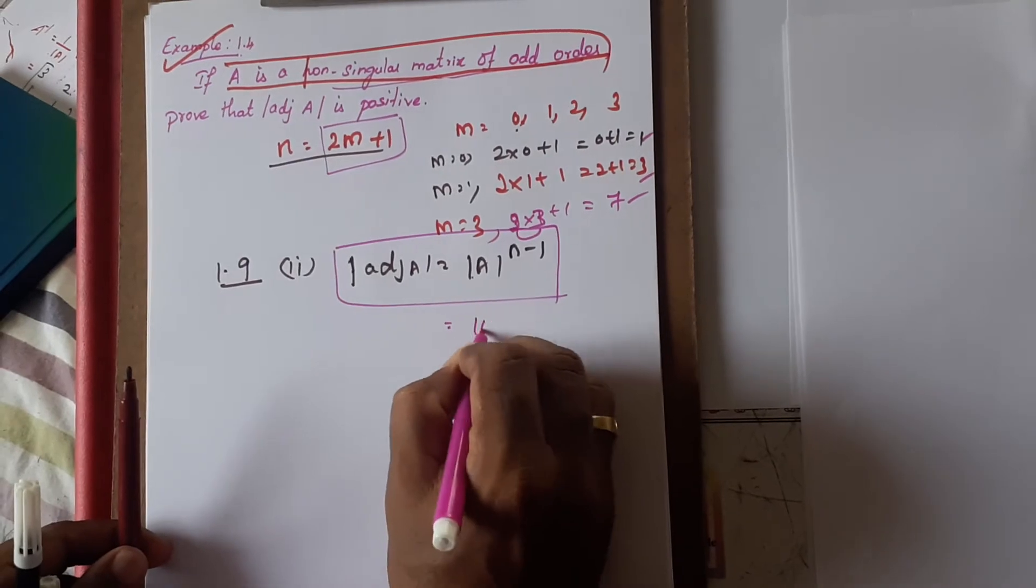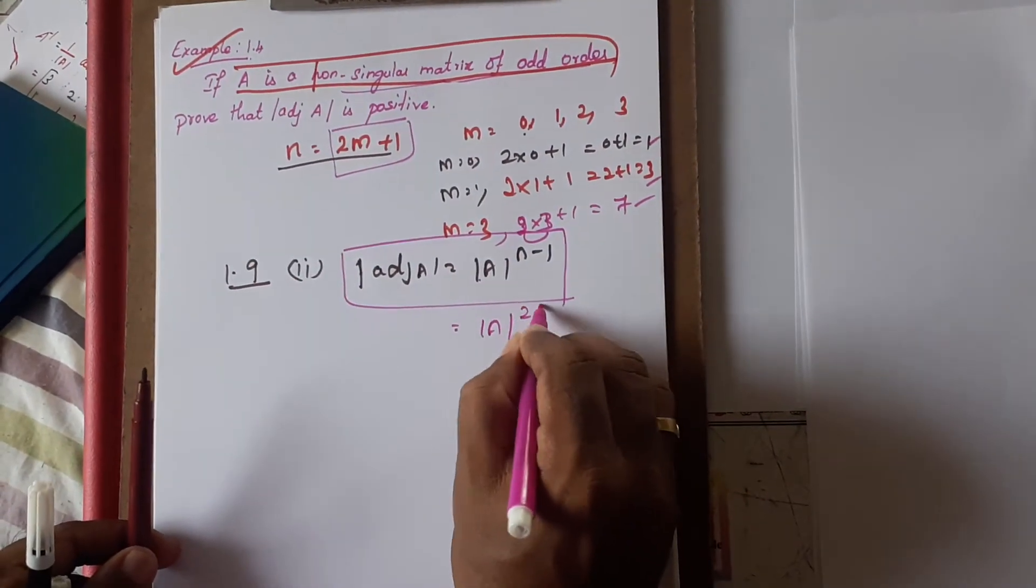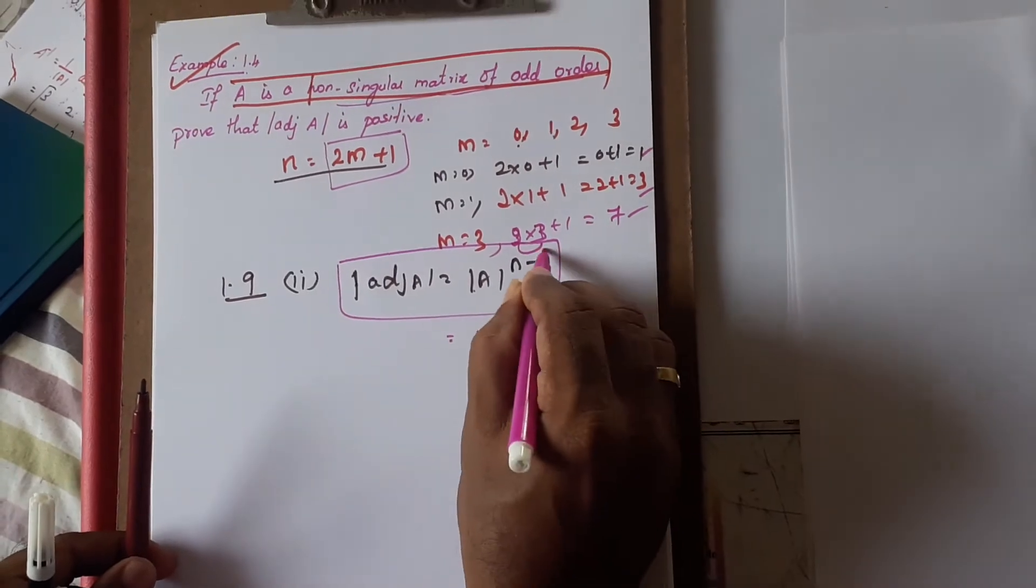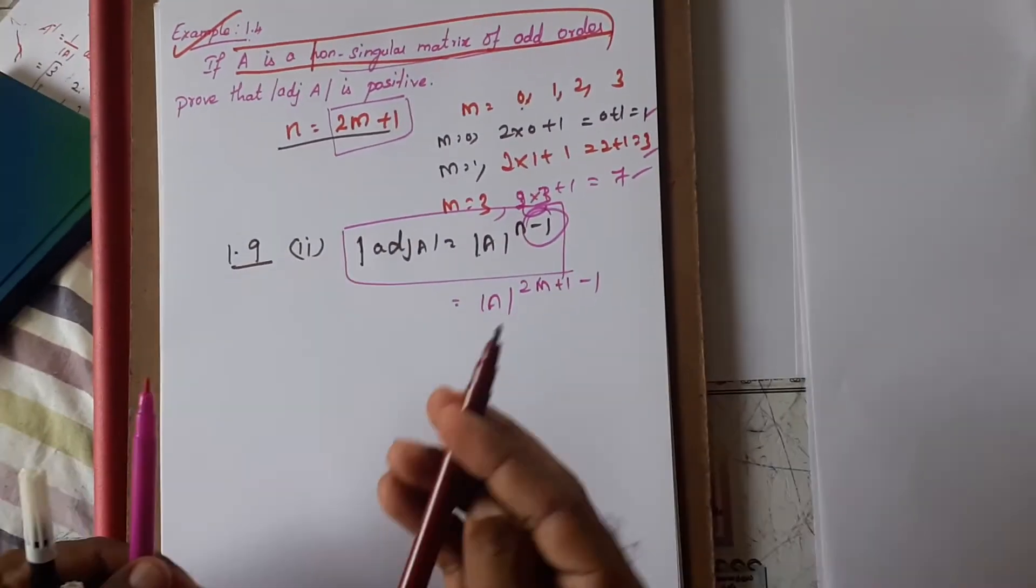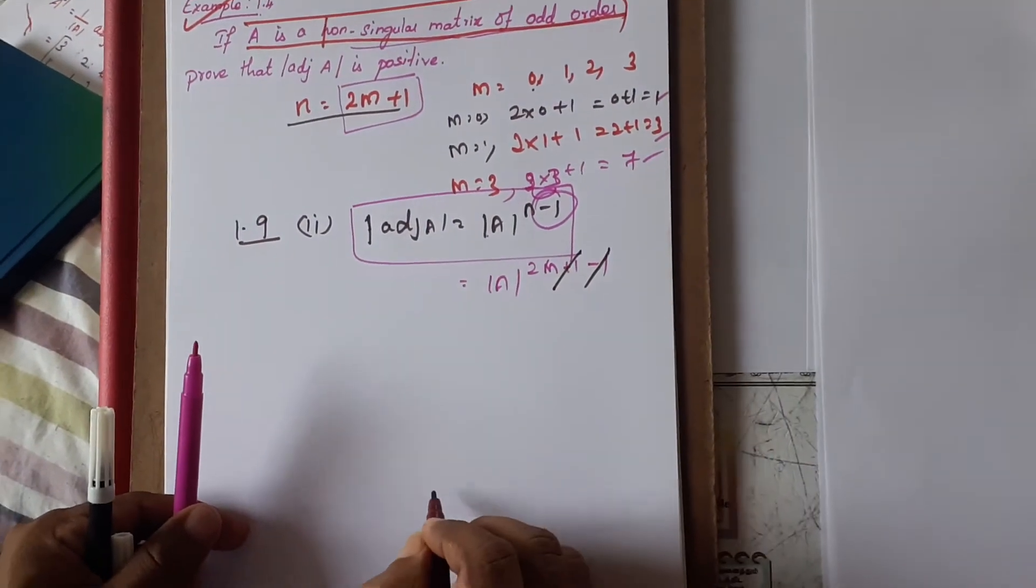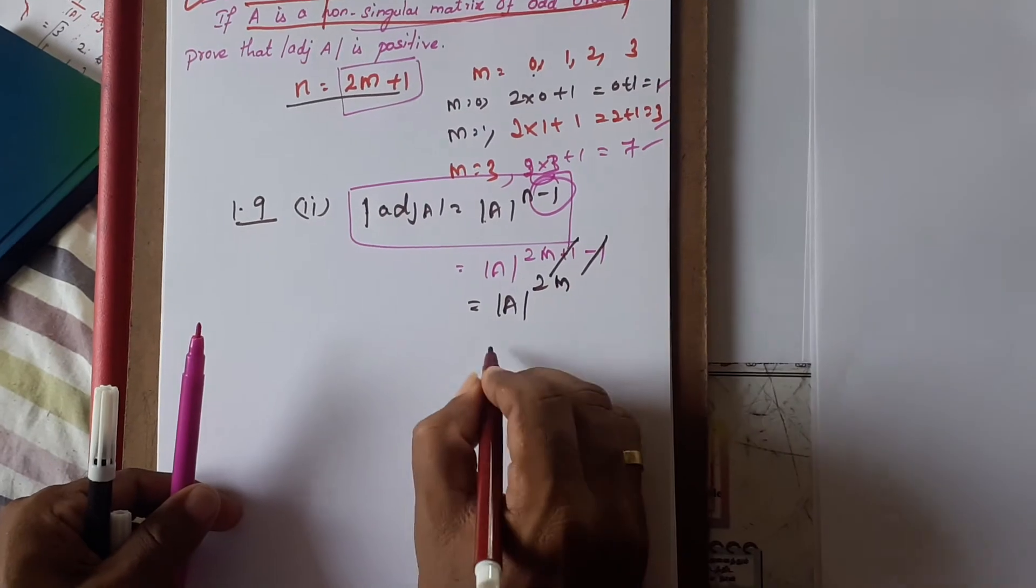Therefore, determinant of A to the power N equals 2M plus 1. Then apply minus 1. After cancellation, plus 1 and minus 1 gives determinant of A to the power 2M.